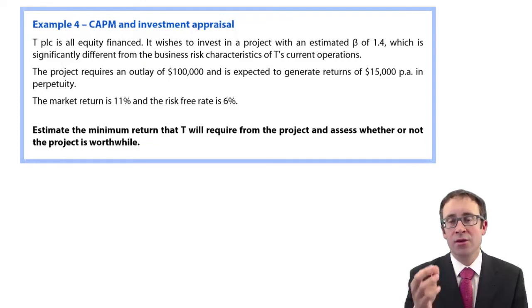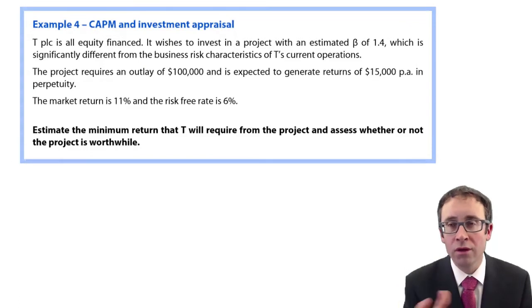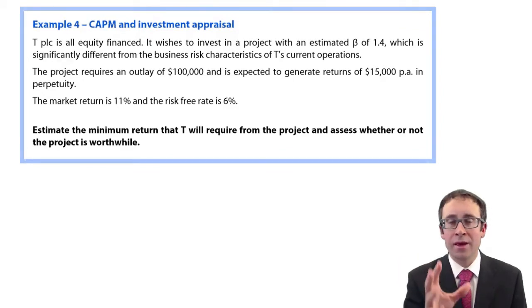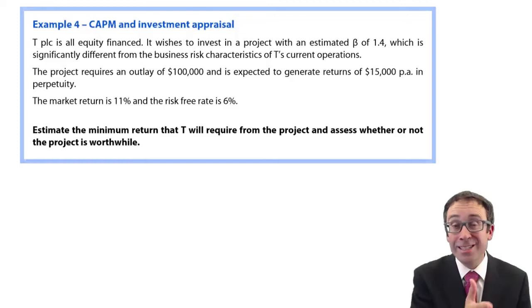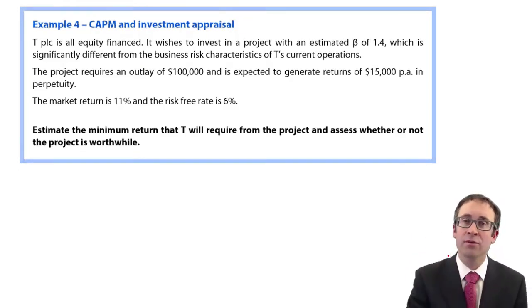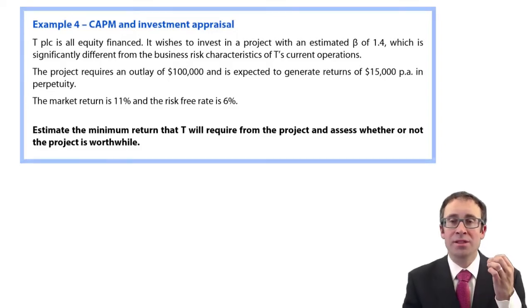In order to calculate that return for a well diversified shareholder for an ungeared company, we can calculate CAPM. CAPM is the return. The return we could then use to work out a discount factor. And then that discount factor can be used and applied to cash flows to work out the NPV of a particular project.